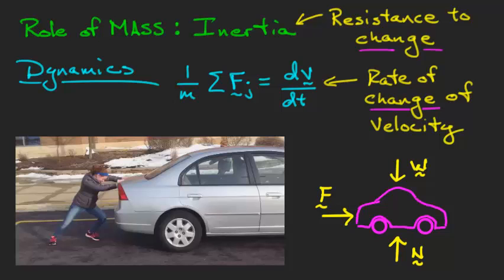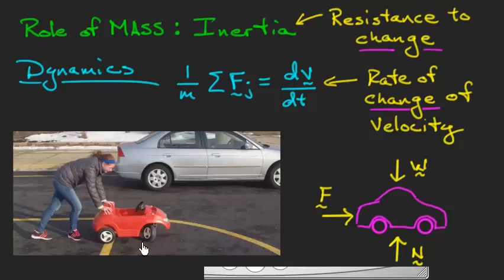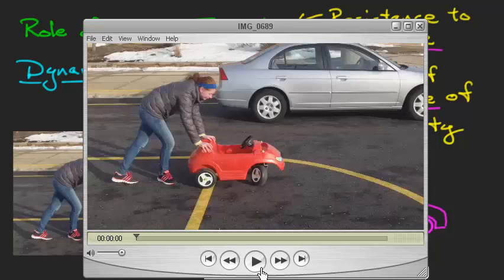So now let me change things a bit. Instead of pushing the family cruiser, let's suppose that my daughter is pushing this car. What's the difference between doing this car and the previous one? It has a lot less mass, a lot less matter contained in this object. Therefore, when she pushes the car, the results are more or less what you would probably expect. Watch it go.